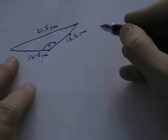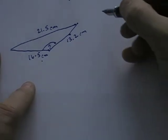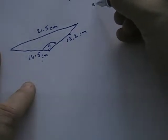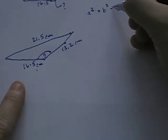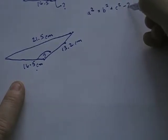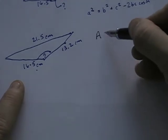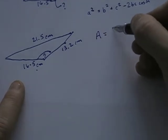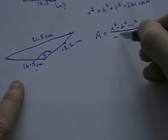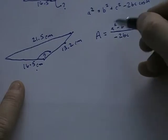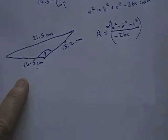So knowing this I need to solve for this angle. In a previous video I took this formula, a squared equals b squared plus c squared minus 2bc cosine A, and I solved it for angle A and said angle A was equal to a squared minus b squared minus c squared over negative 2bc. And then we take the inverse cosine of that.